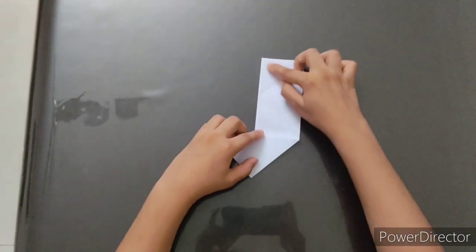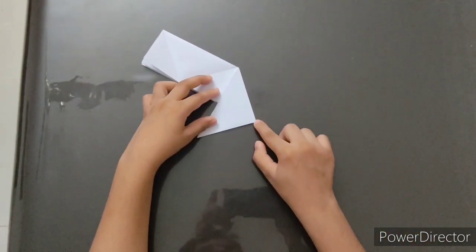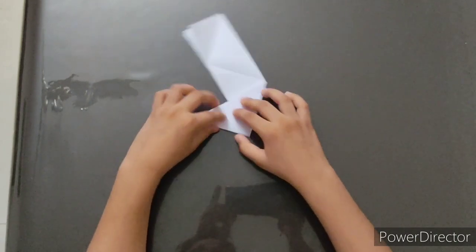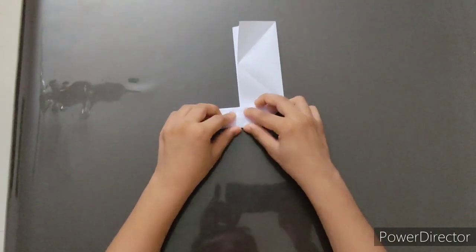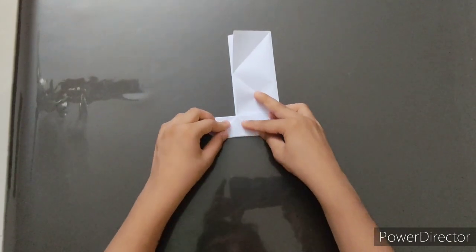Now, you can see a rectangle over here and a triangle here. So, now, fold this pointed edge till here. At this point, the crease will be thick. So, crease it well.